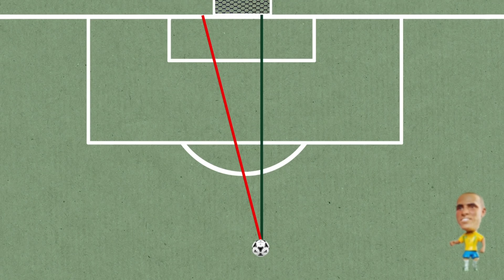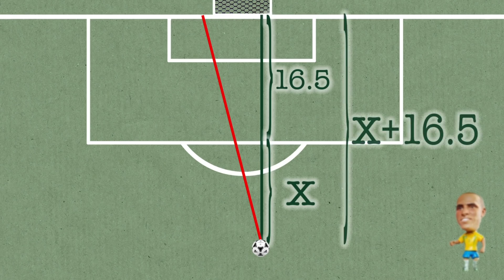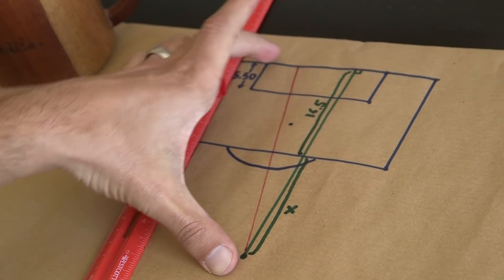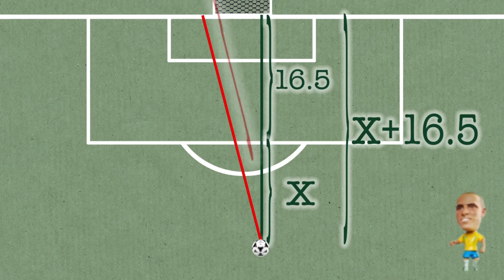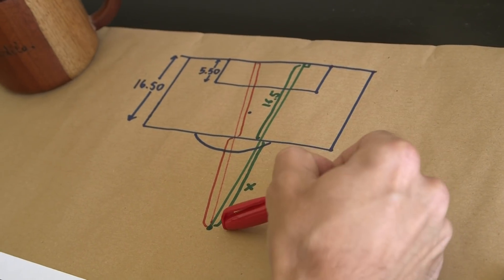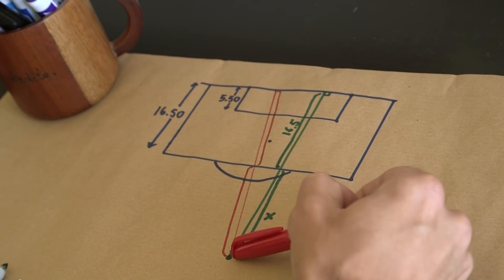If this distance right here is 16 and a half, and this distance is what I'm trying to find — let's call it x — then the distance from the end line will be x plus 16.5. One thing worth doing is seeing how these distances transfer to the red line in the photo. It turns out that 16.5 divided by x is equal to this distance divided by this distance.